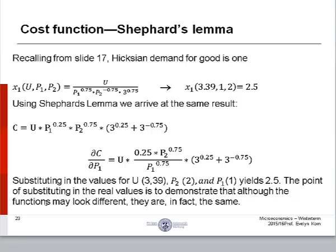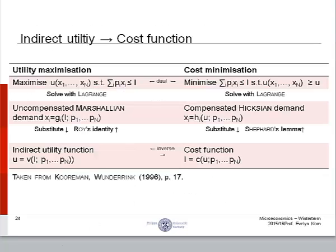The point of substituting in the real values, as I explained in the previous video, again, is to demonstrate that although the functions may look different, they are, in fact, the same. Now, we are on the bottom row, showing the link between Marshallian demand and Hicksian demand.